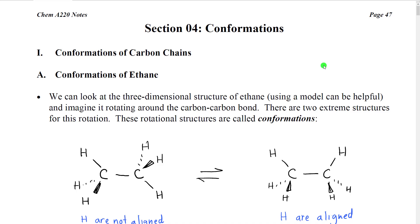In section four we're going to discuss how the shapes of molecules change as they rotate around single bonds. These different shapes form what we call conformations, and we're going to be discussing the conformations both of carbon chains and then later on of rings.